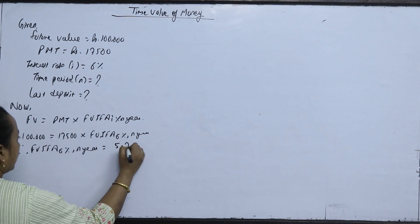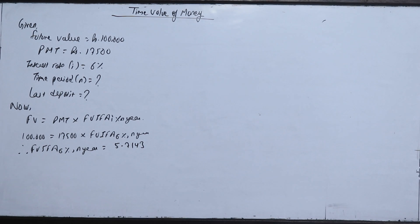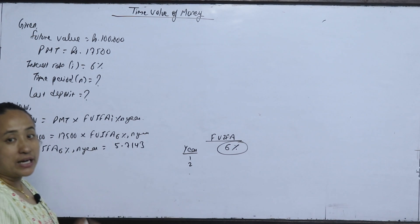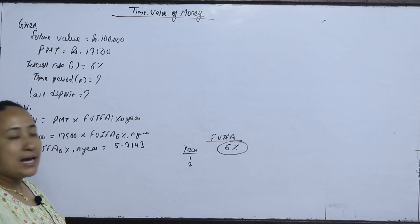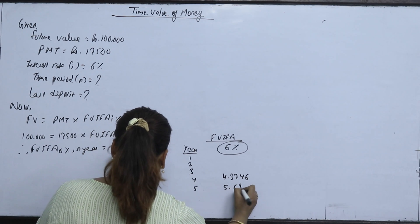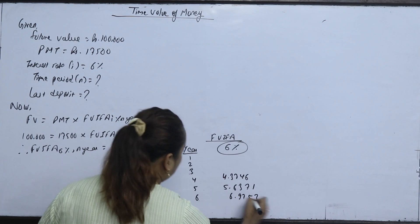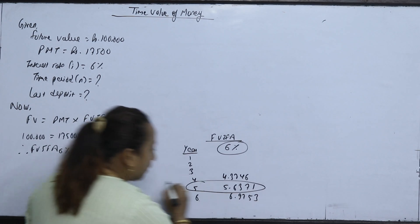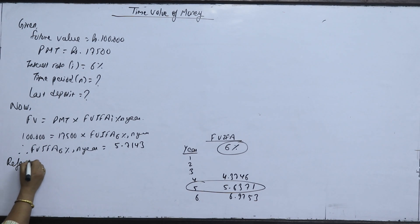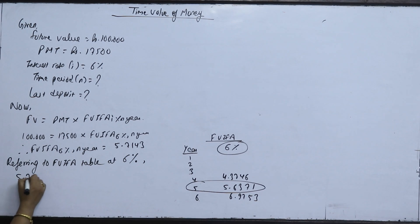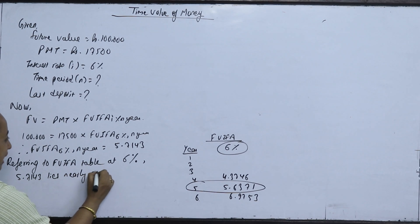FVIFA is 5.7143. We are going to refer to the FVIFA table at 6 percent. At 4 years FVIFA is 4.3746; at 5 years it is 5.6371; at 6 years it is 6.9753. At 6 percent, FVIFA is 5.7143, which corresponds to approximately 5 years.